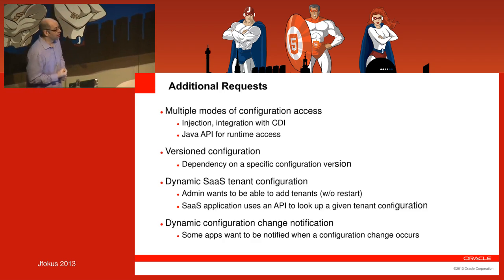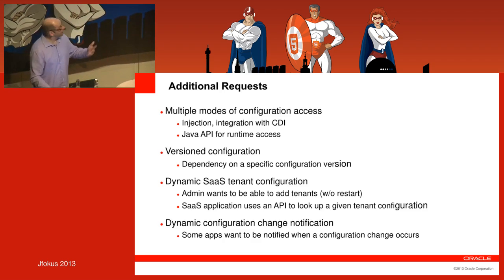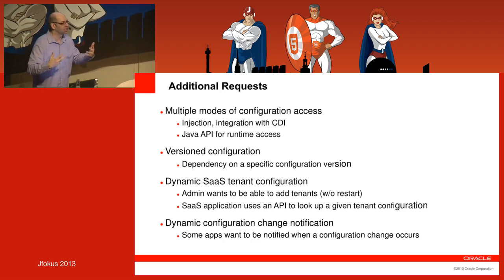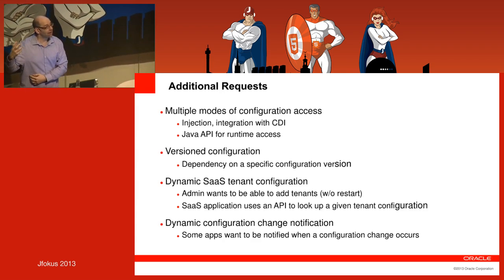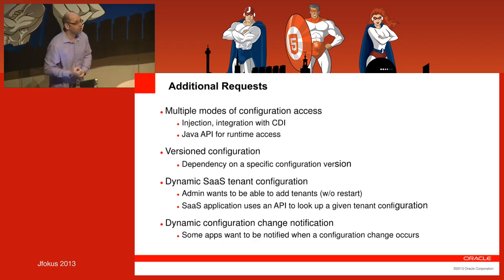We also want to make sure that configuration can be done through injection. When you have a configuration property defined externally, you should be able to access it through CDI or something similar. In addition, there are more advanced requirements: versioning of configurations — knowing which version applies and what changed. Multi-tenancy — configuring on a per-tenant basis, adding a configuration for a specific tenant without redeploying the application. And lastly, change notification — getting a callback from the application perspective when a configuration property has a new value, so you can respond accordingly.